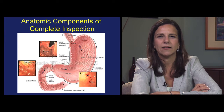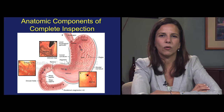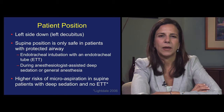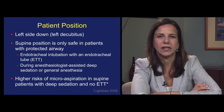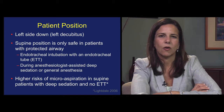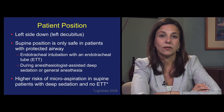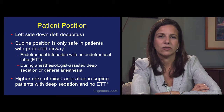It can be helpful to examine anatomic components that make up a complete inspection in a routine way. For example, it can be helpful to always traverse the esophagus, almost immediately retroflex to inspect the cardia, then advance to the duodenum, and then withdraw to inspect the antrum. Patient position can also impact the quality of pediatric endoscopy. The preferred position is left side down, in the left decubitus position. A supine position should only be considered safe in pediatric patients with protected airways, as defined as patients who have their airway protected by endotracheal intubation during anesthesiologist-assisted deep sedation or general anesthesia. At least one study has shown higher rates of microaspiration during upper endoscopy in supine patients who have received deep sedation but have no endotracheal tube.